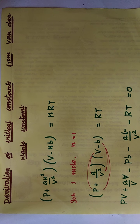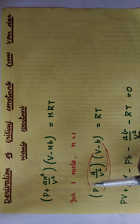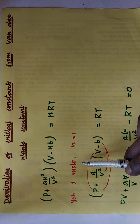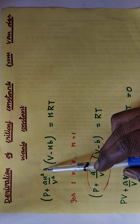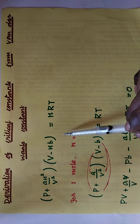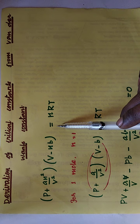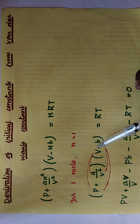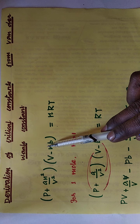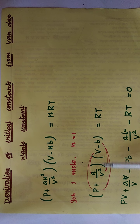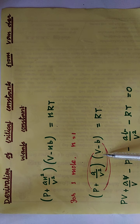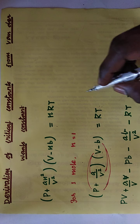Let us proceed with the derivation. The first condition is to consider one mole of gaseous molecules. If we take one mole, then n = 1, so all 'n' terms become 1. By applying n = 1, the Van der Waals equation is modified to: (P + a/V²)(V − b) = RT.